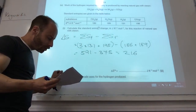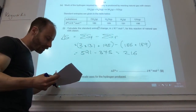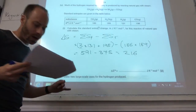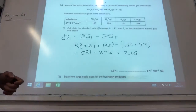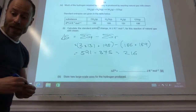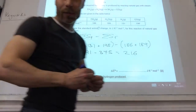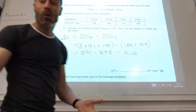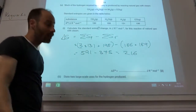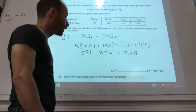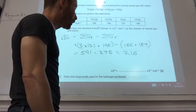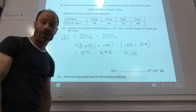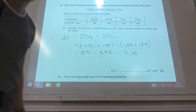Two large-scale uses for hydrogen production: ammonia manufacture is a big one you've known from GCSE, and also fuel cells, which you would have done as part of your electrode potential work.